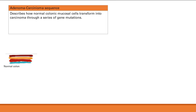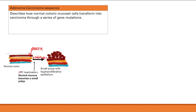The adenoma-carcinoma sequence describes how a normal colonic mucosal cell transforms into a carcinoma through a series of gene mutations. Starting with a normal colon, the very first mutation is inactivation of APC, a tumor suppressor gene. Losing APC leads to uncontrolled cellular proliferation, turning the normal mucosa into a small polyp with hyperproliferative epithelium.